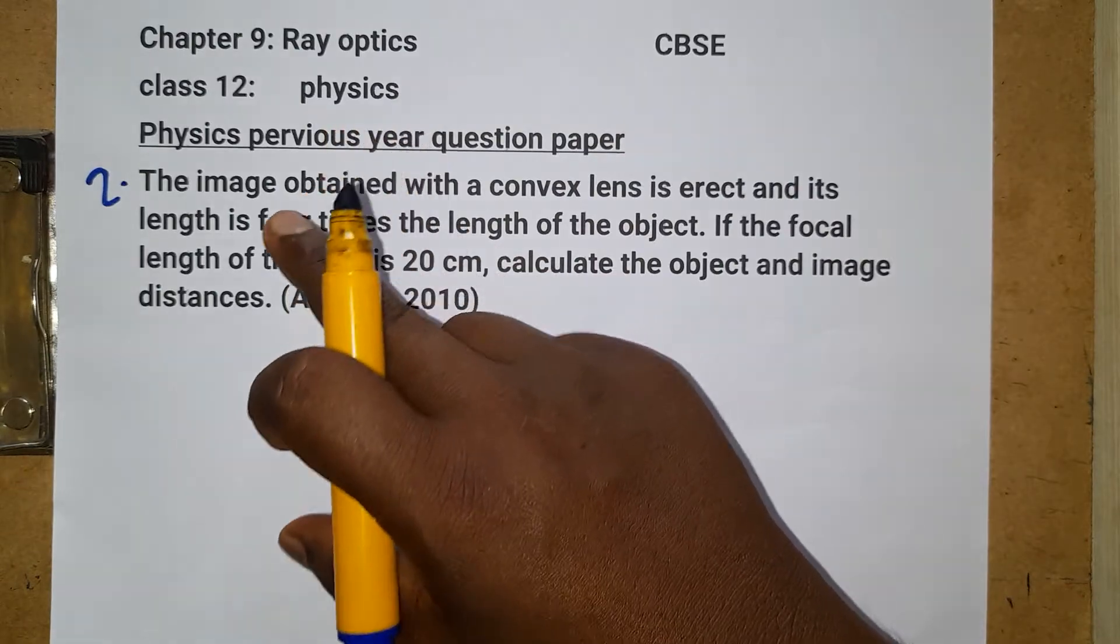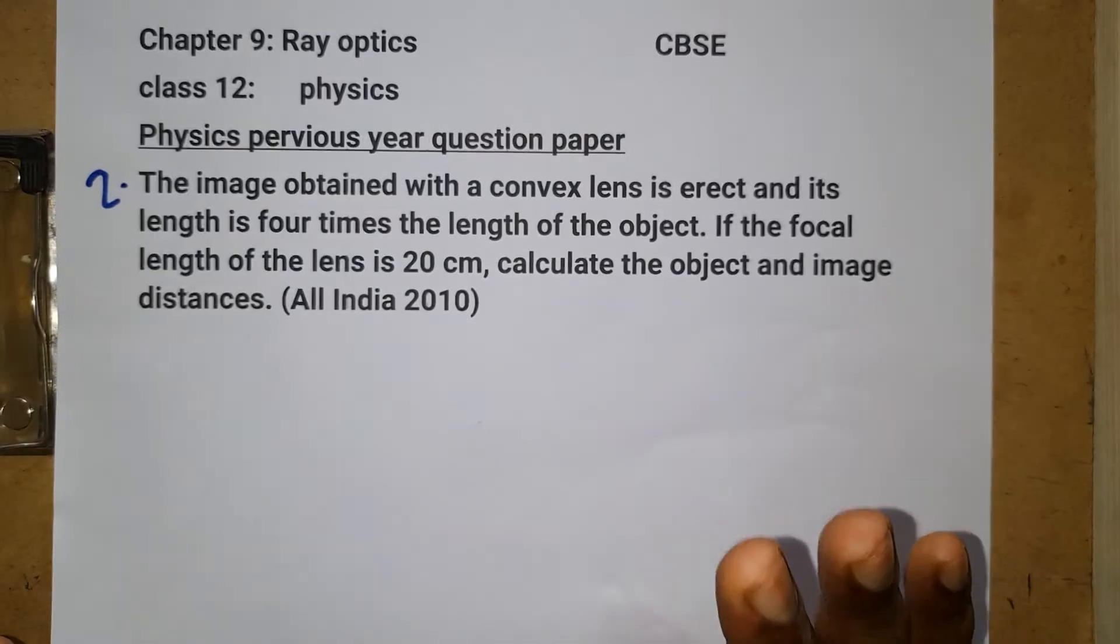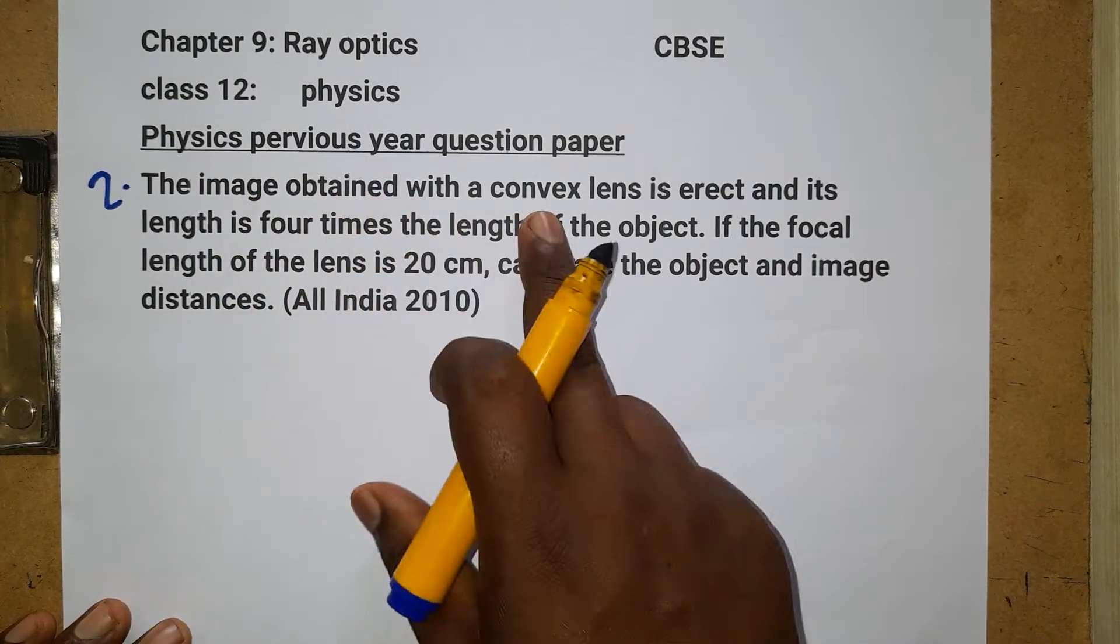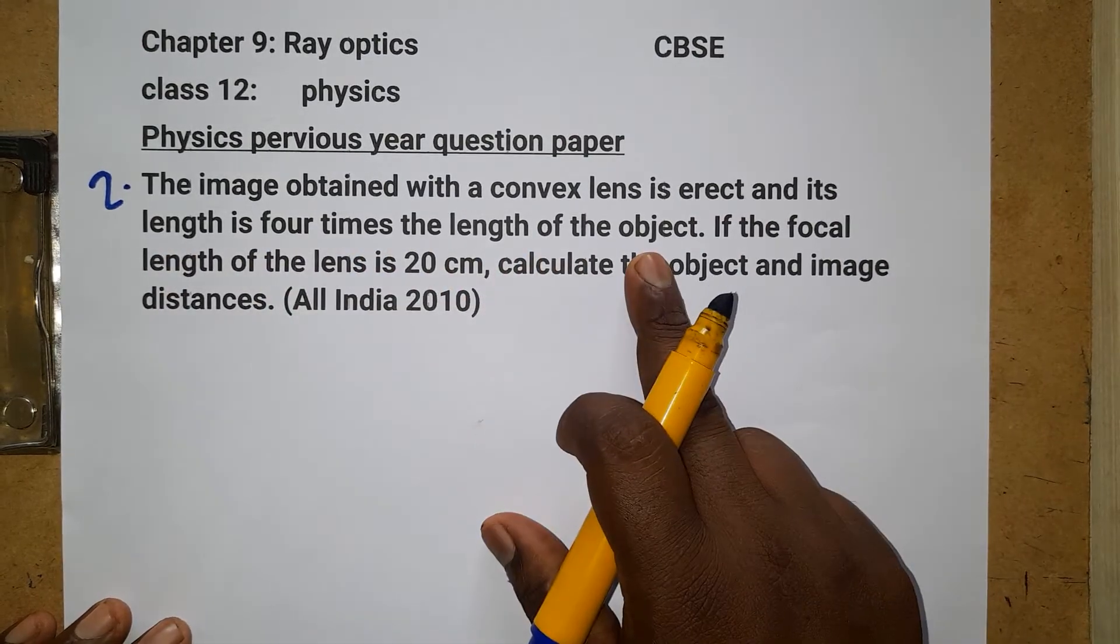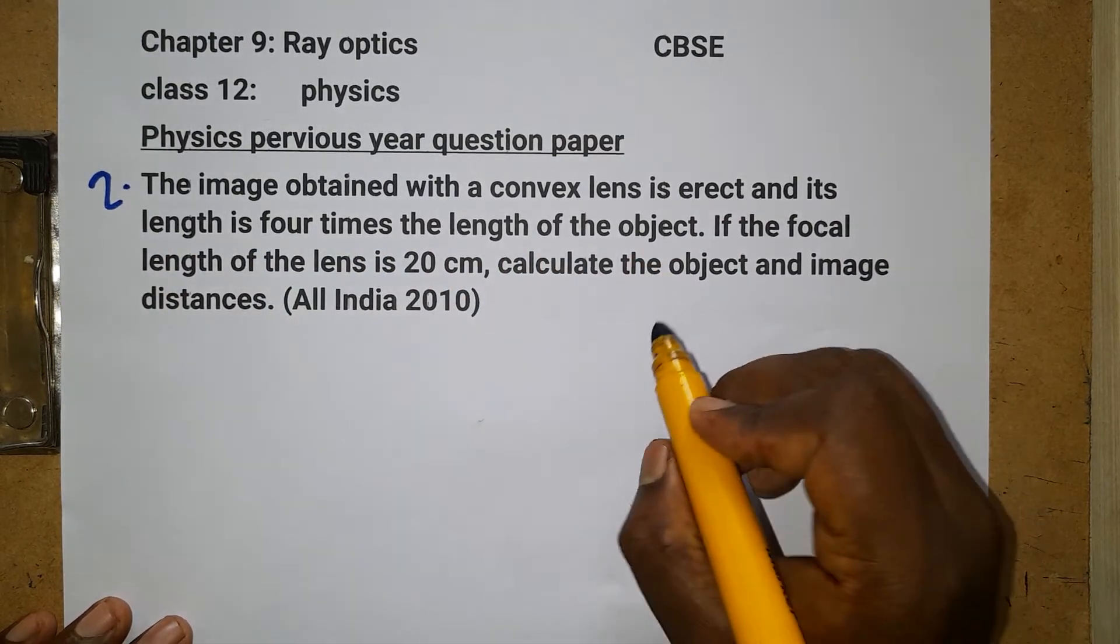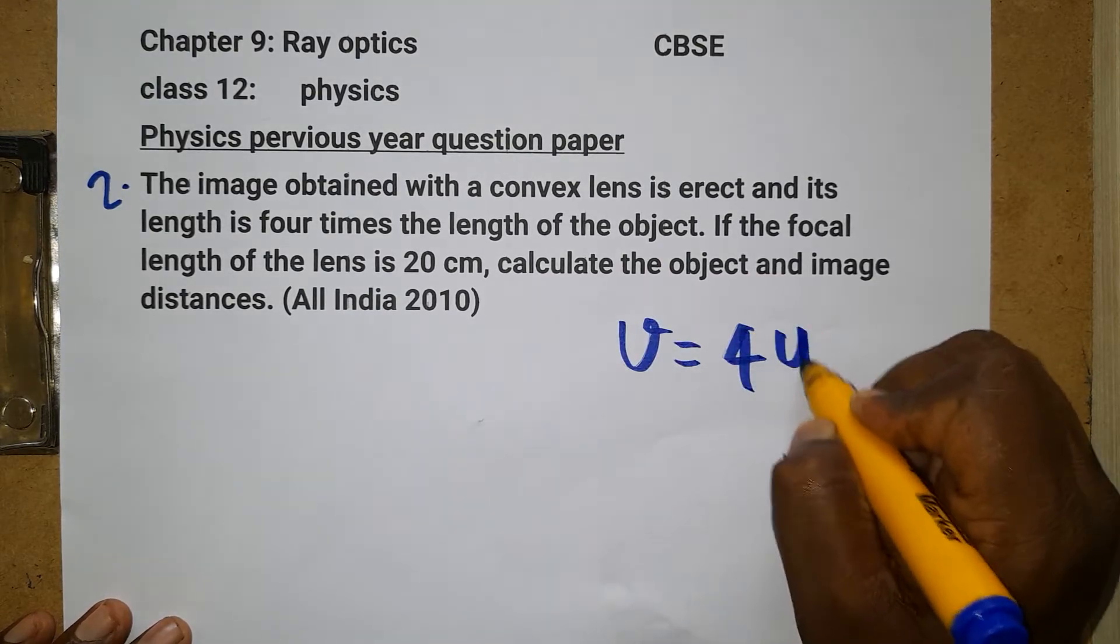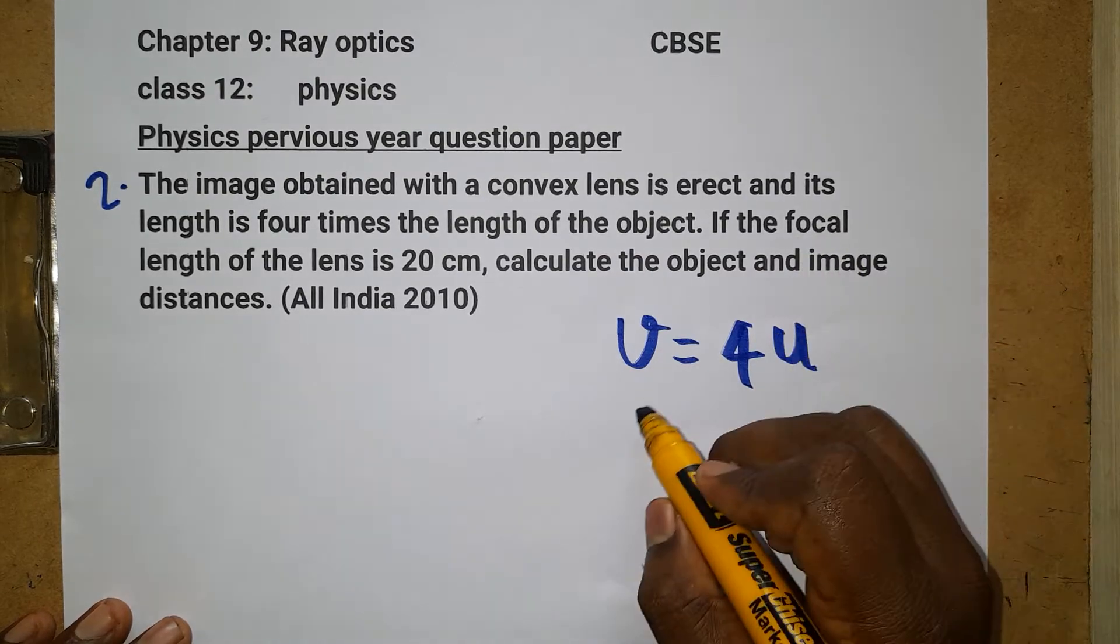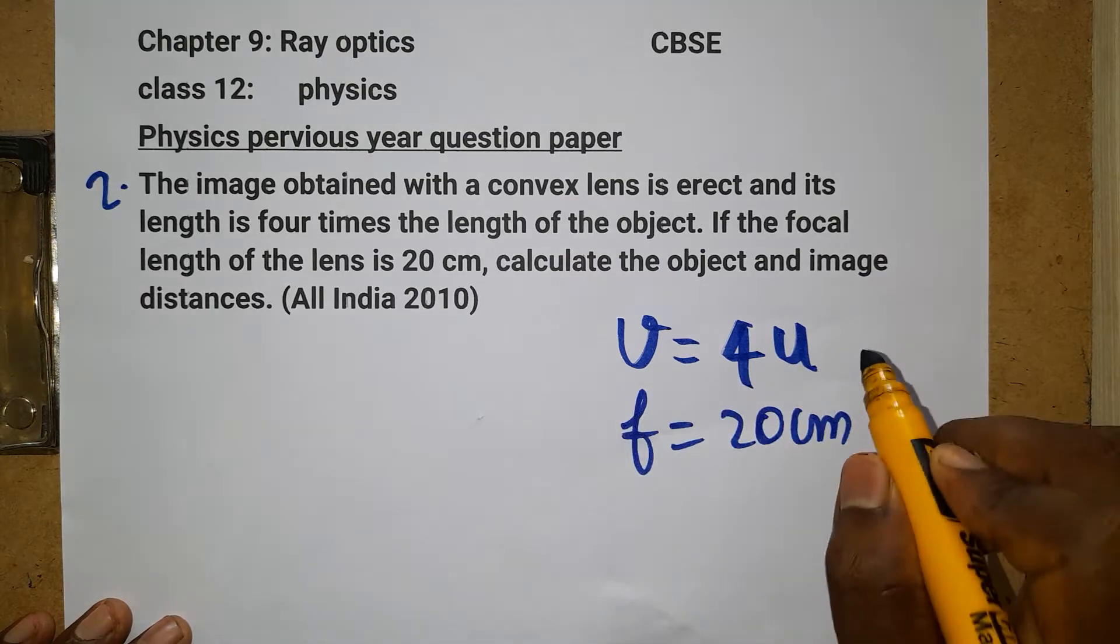Now we will see the question. It is about a convex lens that produces an erect image. The image obtained with the convex lens is erect and its length is 4 times the length of the object. The image distance is 4 times the object distance. The convex lens has a focal length of 20 centimeters. Now they ask you to calculate the object and image distance.